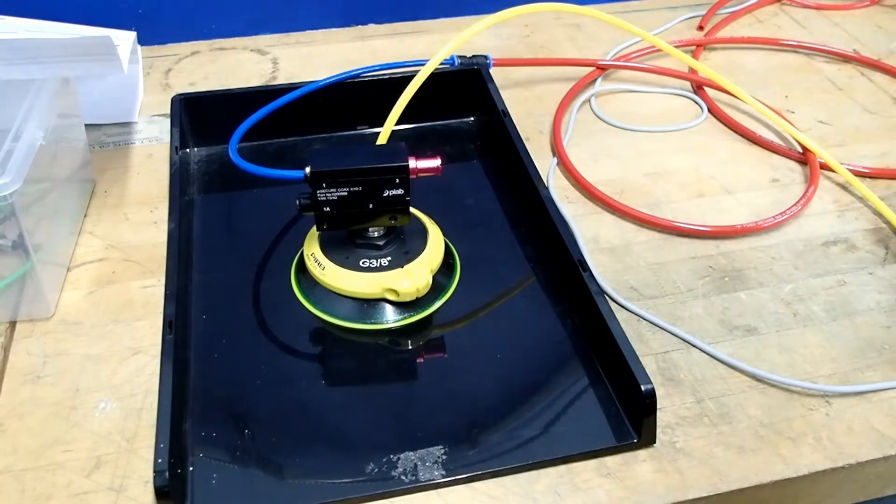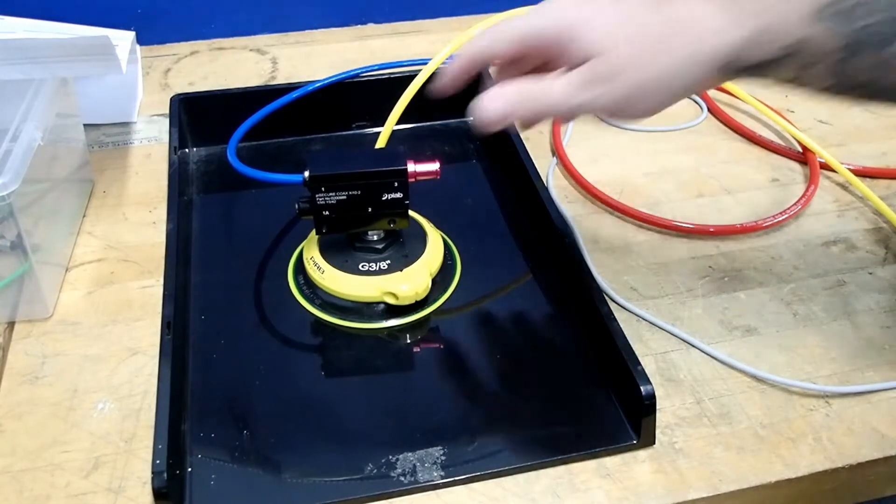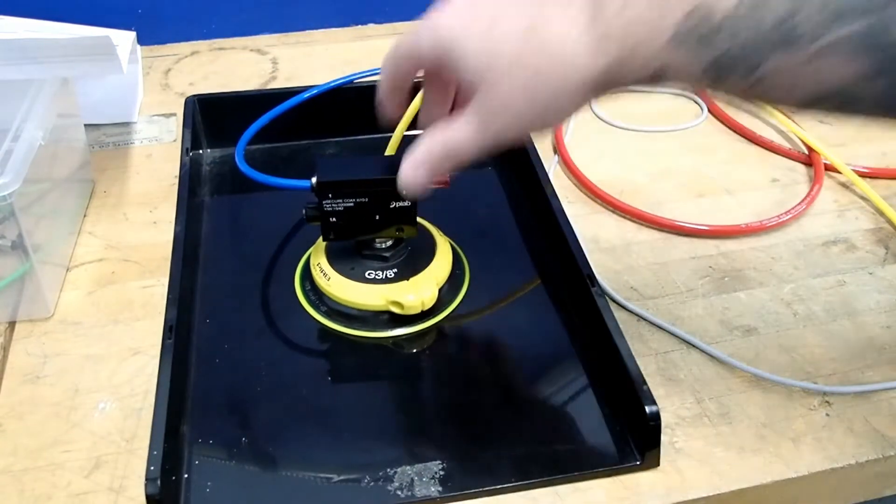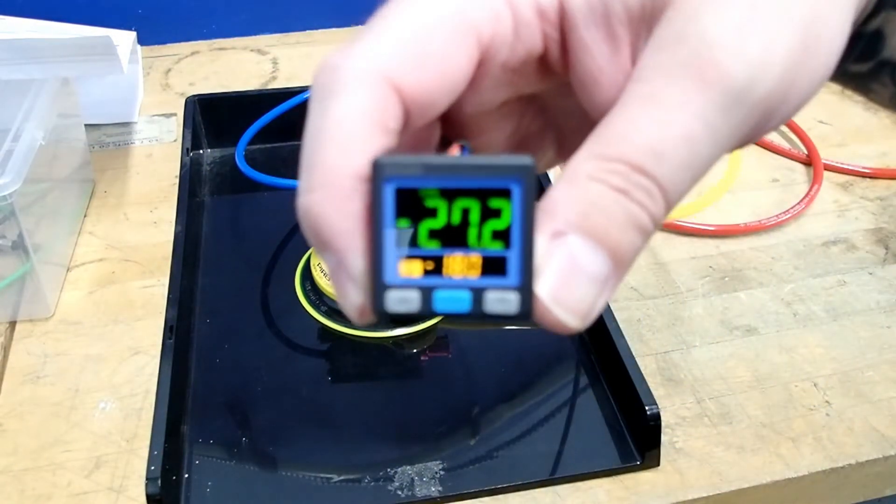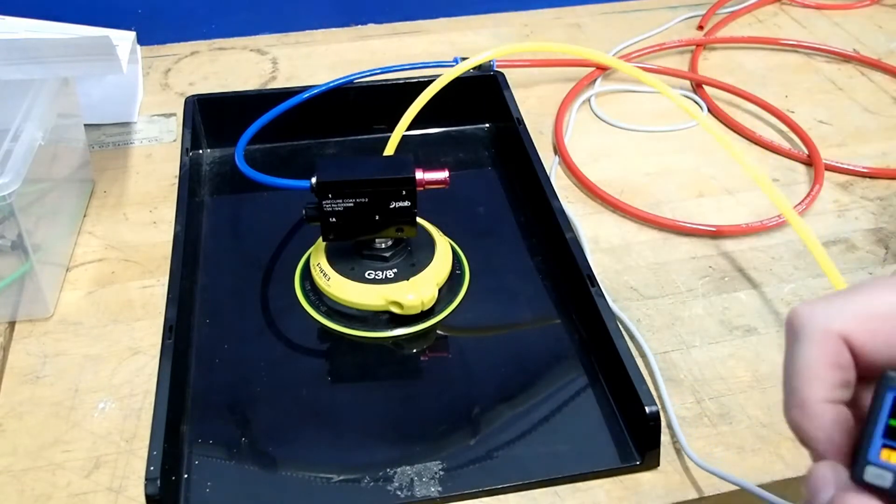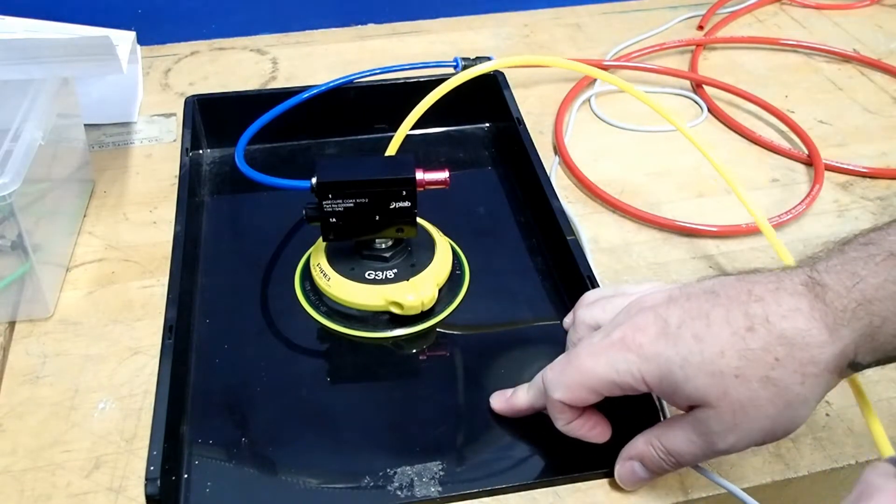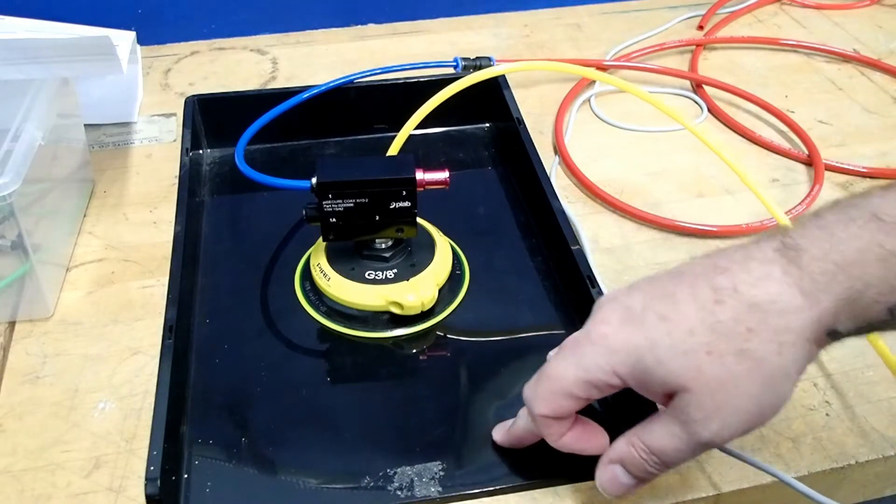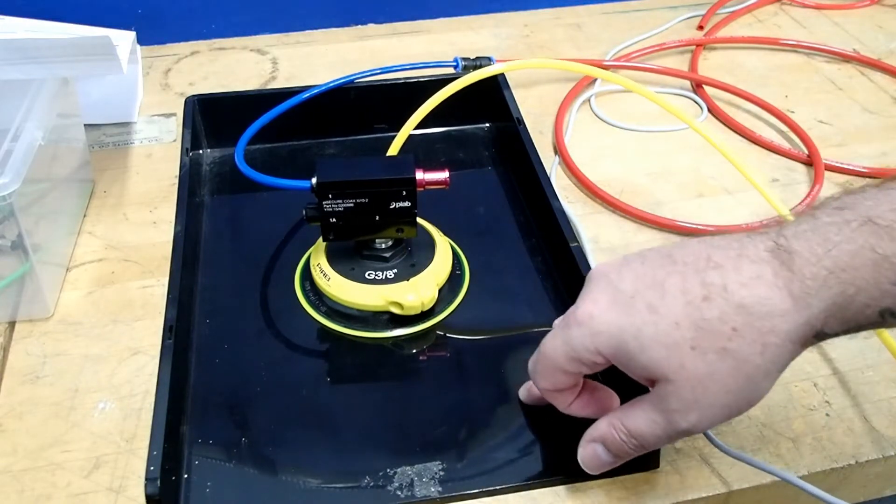So let me power it up and we'll take a quick look. So as you can see, we're able to achieve our vacuum. We're achieving over 27 inches, which is excellent. We're just utilizing this plastic tray as our airtight piece. This could represent a sheet of glass, plastic, or sheet metal.